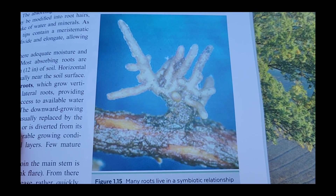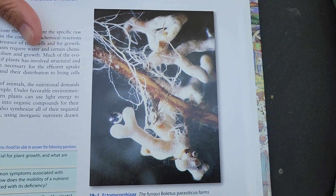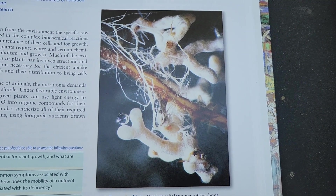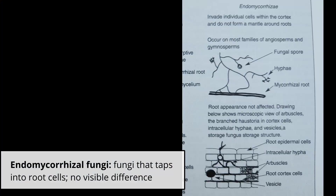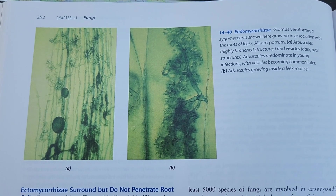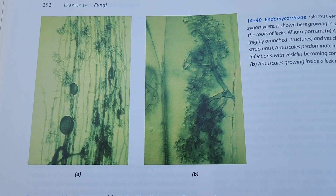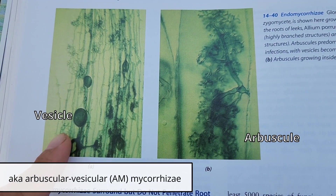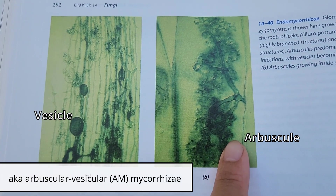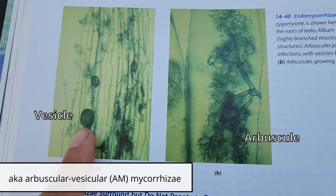Ectomycorrhizae form a covering or sheath on the root, resulting in very characteristic short, stubby white roots that form a little Y shape. The second group is the endomycorrhizal group. These do tap directly into root cells and you won't see a change in the appearance of the root itself. This type is also called vesicular arbuscular mycorrhizae, which refers to two specific structures the fungus forms inside the plant root cells.